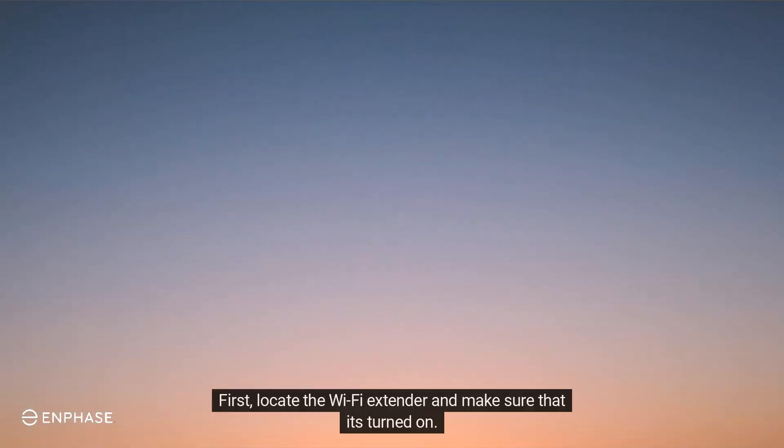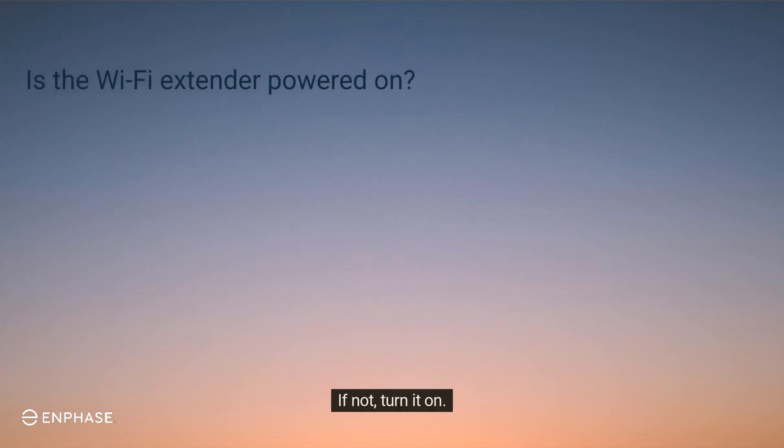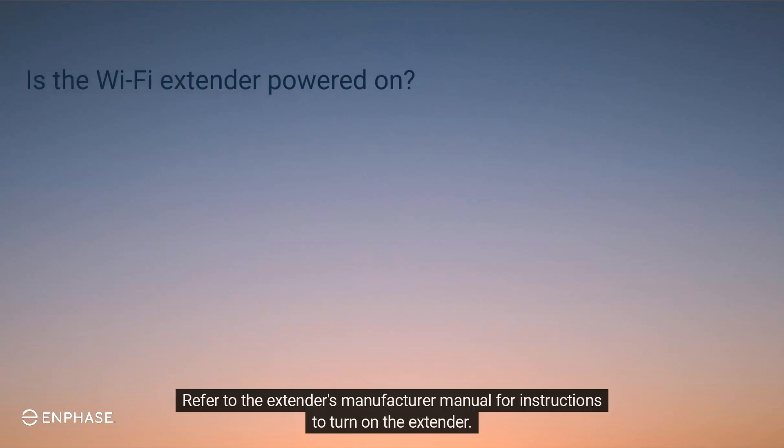First, locate the Wi-Fi extender and make sure that it's turned on. If not, turn it on. Refer to the extender's manufacturer manual for instructions to turn on the extender.